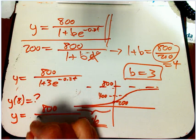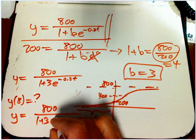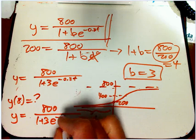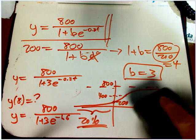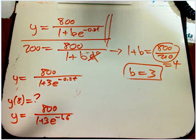It should be bigger, 800 over 1 plus 3, E to the minus 8 times 0.2 is 1.6. I guess I can erase that, even though it's so nice.